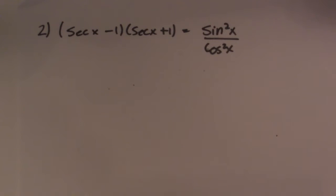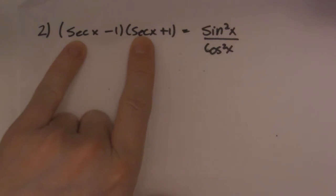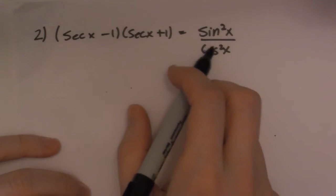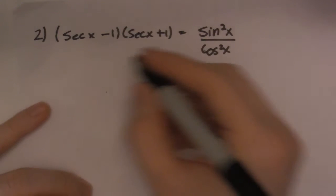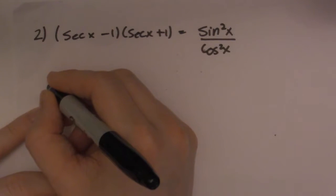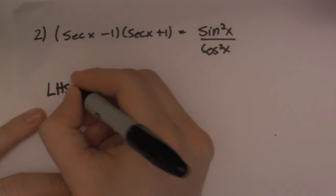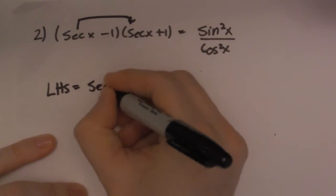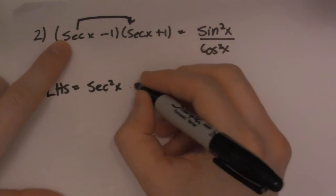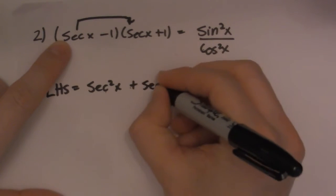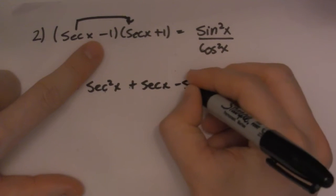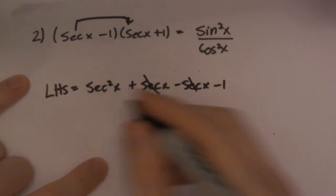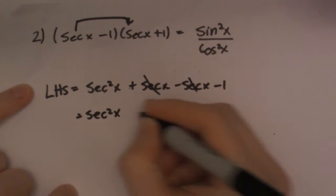So the next one I have is a little more complicated. But I do have secants involved here. So let's give it a shot, see what I can do with it. So again, I'm starting with this side, even though there's a couple of things I can do over here. I'm starting with this side. So I'm going to start with the left hand side. And then I'm going to FOIL. So I'm going to do first, secant squared x, outside plus secant x, inside minus secant x, and then last. So I can go ahead now and cancel these two out. And I get left with this form.